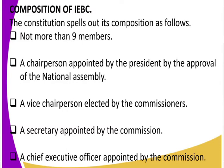In the Kenyan IEBC composition, we have said it should not have more than nine members. The chairperson is appointed by the president, the vice chairperson is elected by the commissioners, we have the secretary of the commission, and finally the CEO — the chief executive officer of the commission — who is also appointed by the commission.